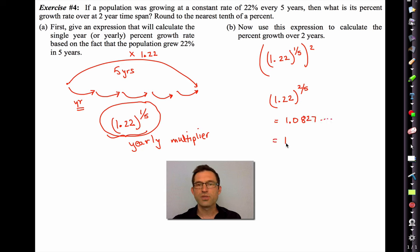That's 1.0827. Take a look at this. That's an 8.3% growth rate every two years. Isn't that kind of cool? So we take that 22% over a five-year span, we bring it down to a one-year by raising it to the one-fifth, and then we extend that to two years by squaring. Percents are all about exponents. Make the time period larger, we raise to a sort of a whole number exponent, make it smaller, and we raise to a fractional exponent.